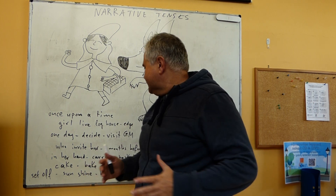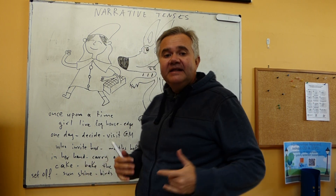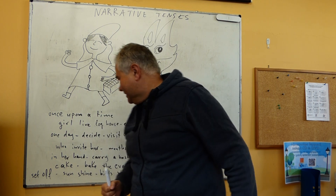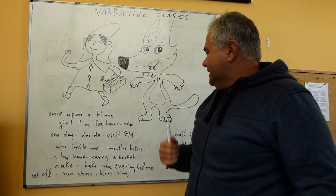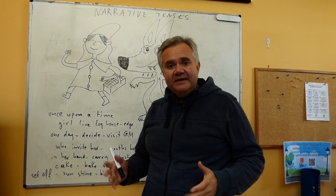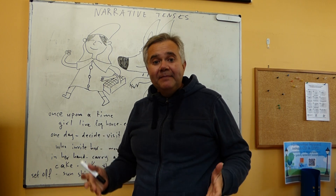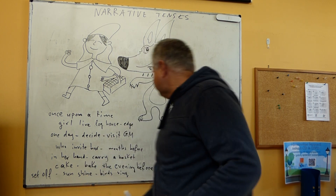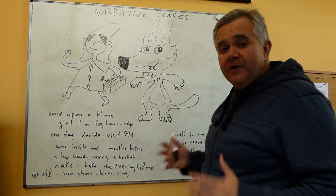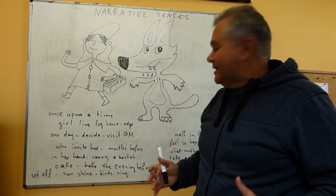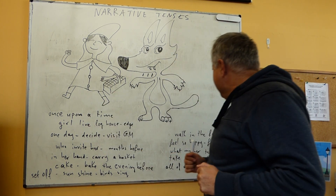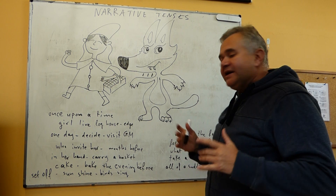In her hand she was carrying a basket which contained a cake that her mother had baked the previous evening. When she set off, the sun was shining and the birds were singing happily that the winter was over. As she was walking through the forest, she felt so happy that she totally forgot what her mother had told her, and she took a wrong turn.